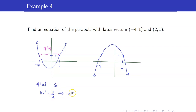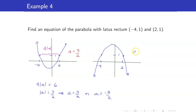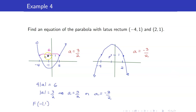Therefore, a equals 3 halves or a equals negative 3 halves. For the parabola opening upwards, this is the case when a equals 3 halves. When the parabola is going downwards, a equals negative 3 halves. To get our vertex, we first get our focus. The focus is the midpoint of the two latus rectum endpoints, which is 3 units away from (negative 4, 1). So the focus is (negative 1, 1).